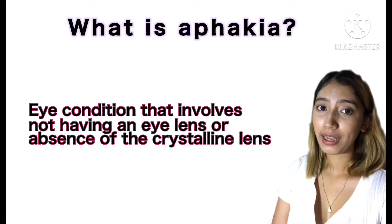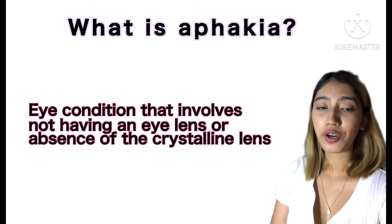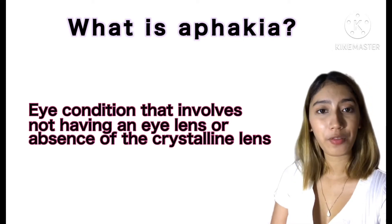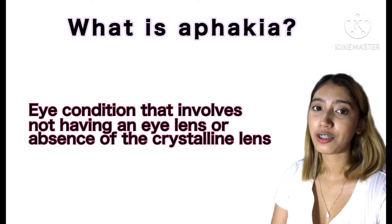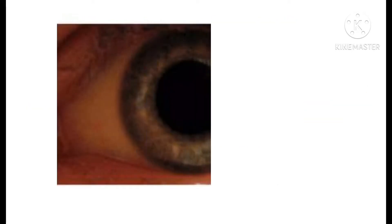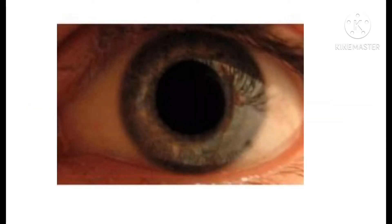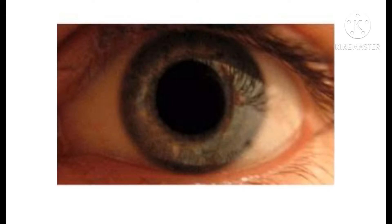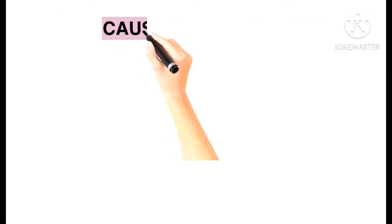Aphakia is an eye condition that involves not having an eye lens, or absence of the crystalline lens of the eye. The lens is a transparent structure in the eye that is suspended immediately behind the iris, and it brings rays of light to focus on the retina.